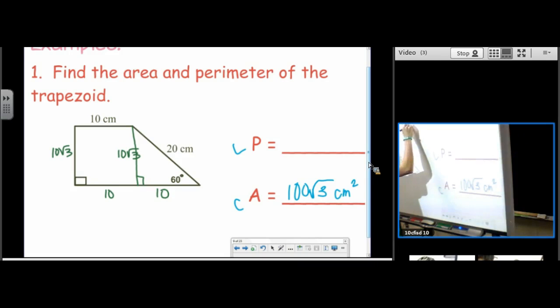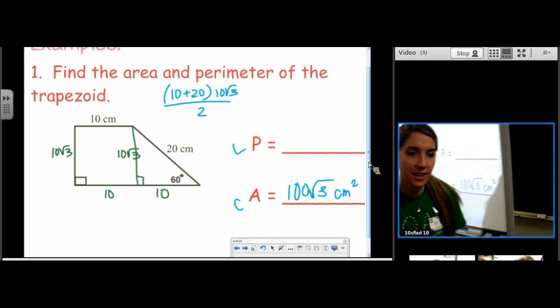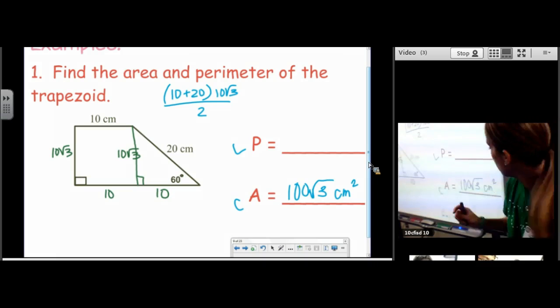So area would be base 1 plus base 2 times the height divided by 2. So do we want to tweak our answer? Yep. That's okay. I'm glad I'm not the only one who makes mistakes.